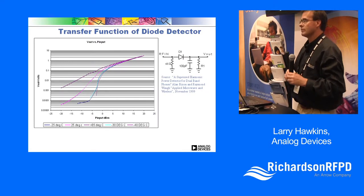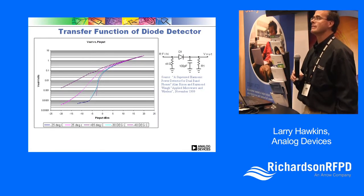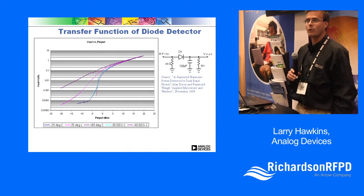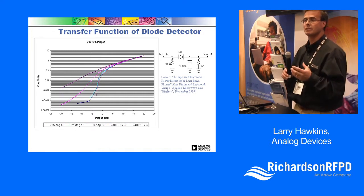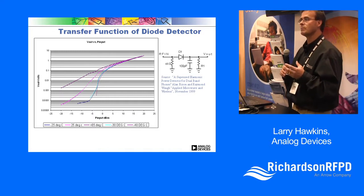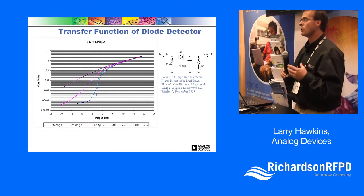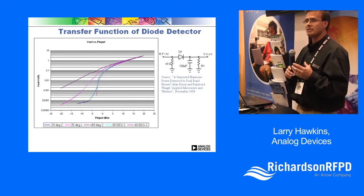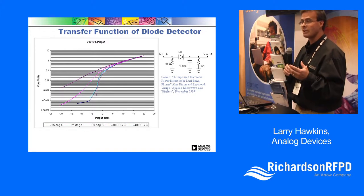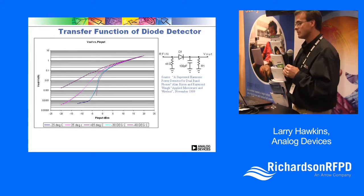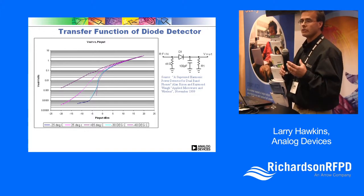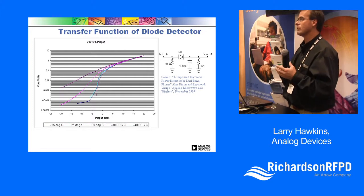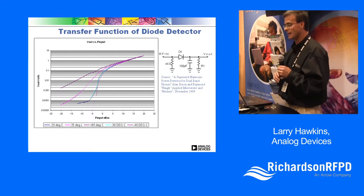In order to accurately measure the output power, you have to know what you're measuring. The more you know about what you're measuring, the more accurate you can be. Past technologies include Schottky diodes to determine output power from your power amplifier or whatever else you're measuring.